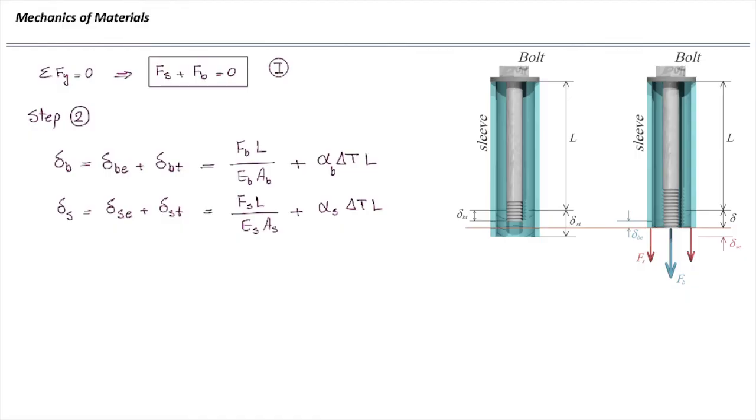Alright, now I'm going to go to the third step which is the compatibility of deformation. This is the main part for solving these types of problems. We can see that the total deformation in the bolt and sleeve should be equal to each other because they are restrained. So I'm going to apply this condition.